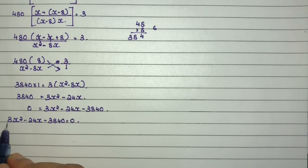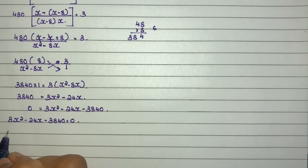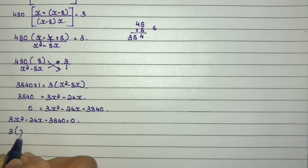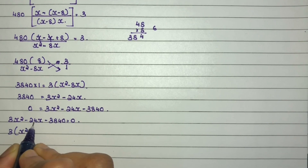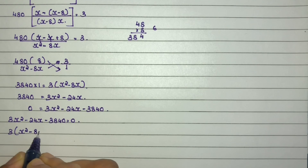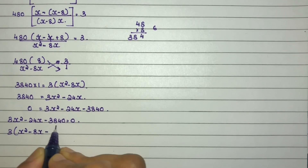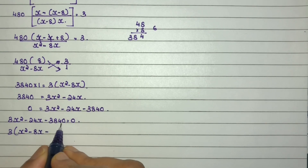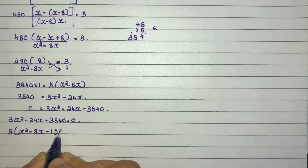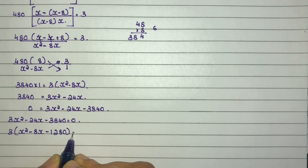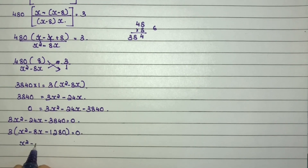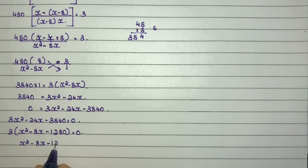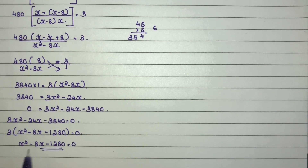Simplifying by dividing through by 3: x squared minus 8x minus 1280 equals 0, where x is the speed of the train.